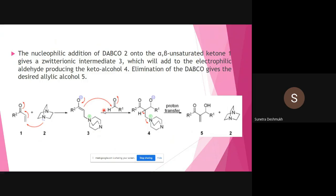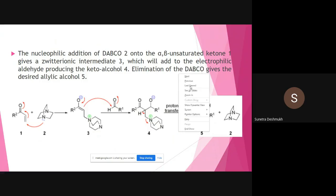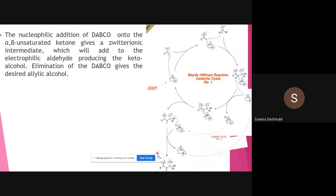Third, the zwitterionic intermediate adds to the electrophilic carbonyl carbon, producing the keto-alcohol. Fourth, elimination of DABCO gives the desired allylic alcohol. The previous slide mechanism explains everything in detail, while this is a simplified overview. The full mechanistic pathway is better understood from the detailed mechanism. This is useful for your study or exam preparation.